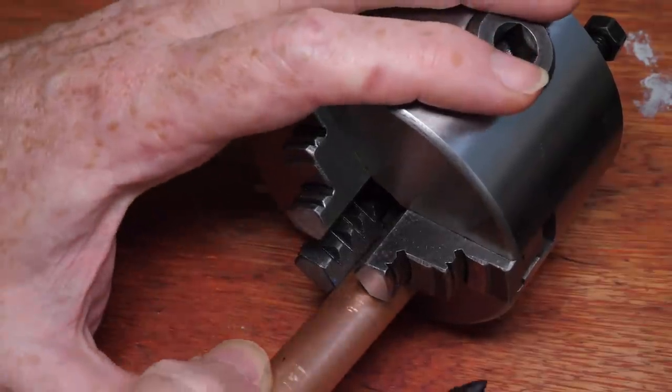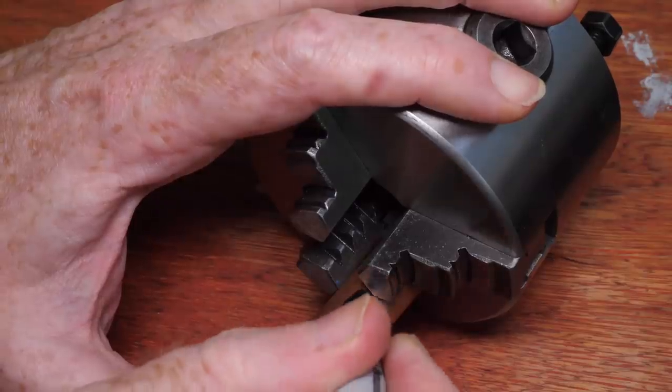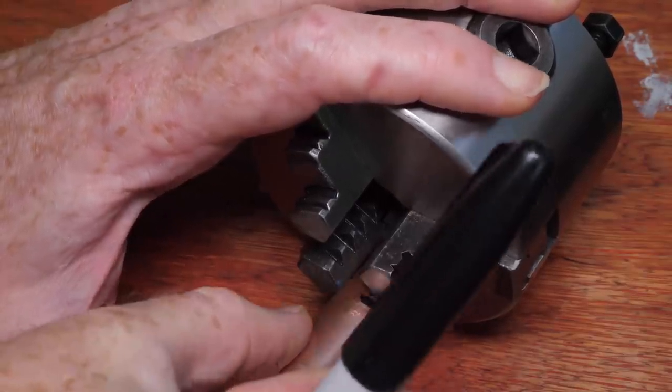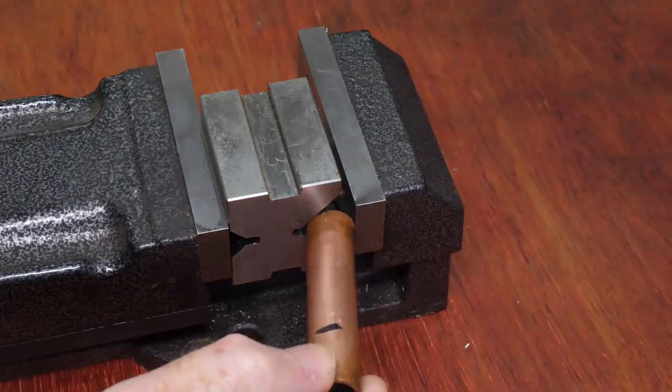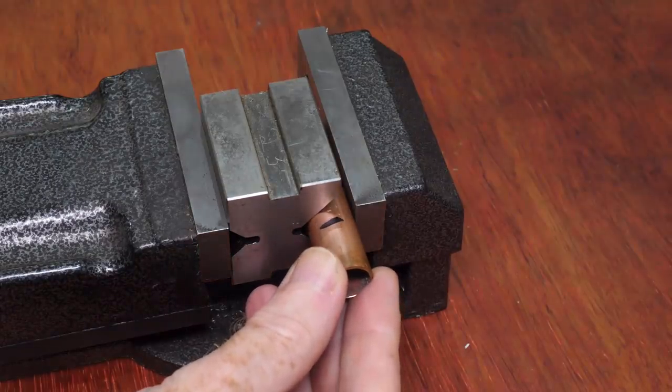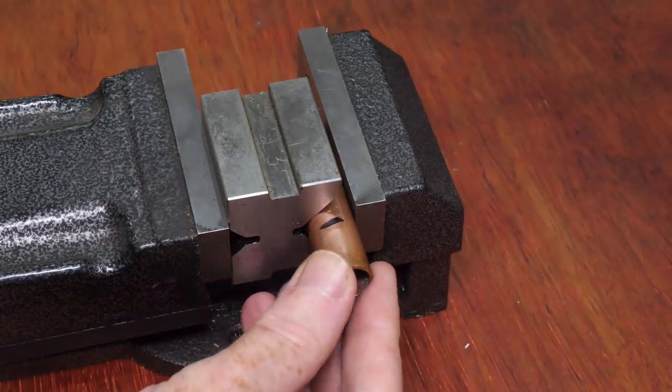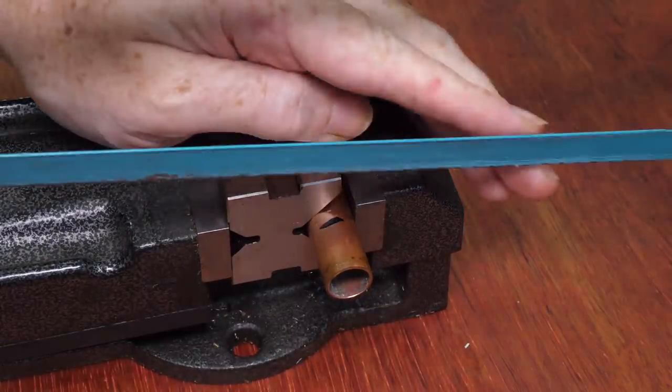The first step is to mark out the right length of pipe needed to make one jaw. As an extra challenge, the floor repairs mean that I don't have a proper bench to fit my vice to right now, so I'm going to have to hold it still by hand.